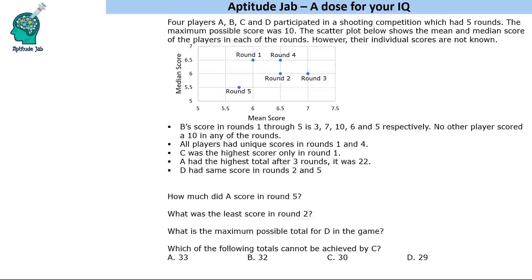Welcome to Aptitude Jab. This is a set based on a scatter graph — a logical one. There are four players A, B, C, D who participated in a shooting competition with five rounds. The maximum possible score was 10 in any round, and the scatter plot shows the mean and median score of the players in each round. Individual scores are not known, and some additional information is given.